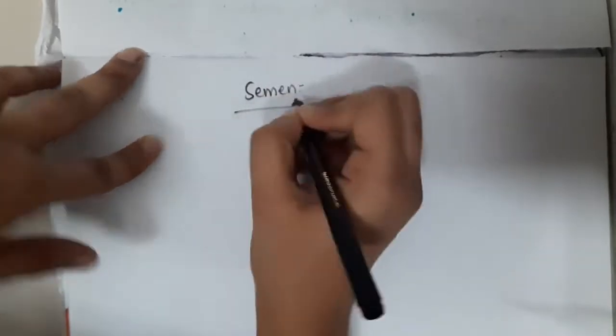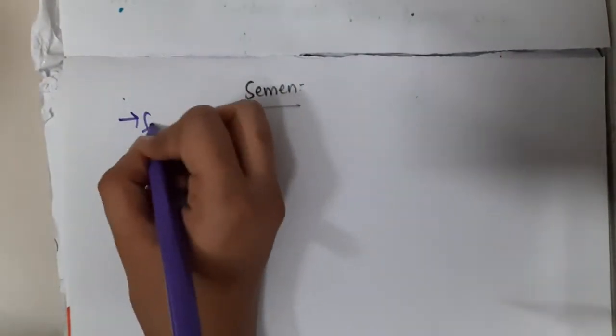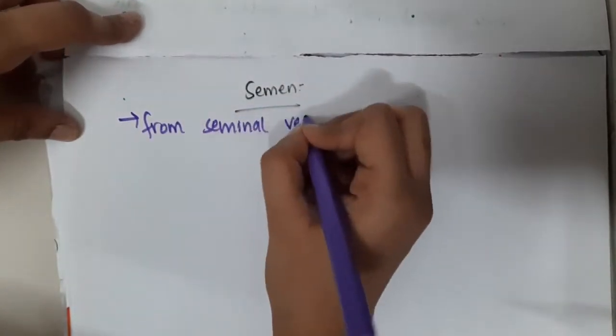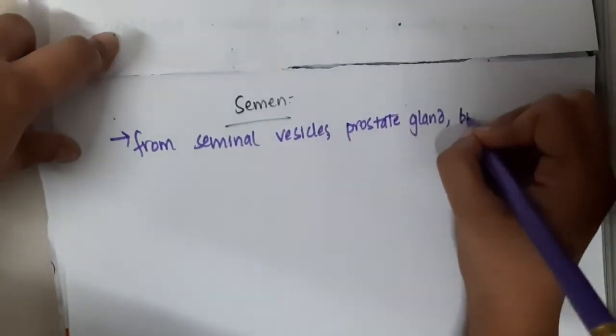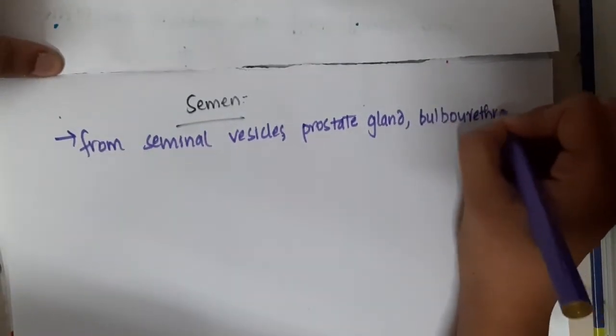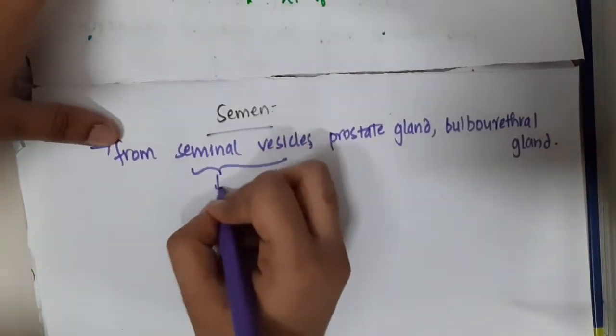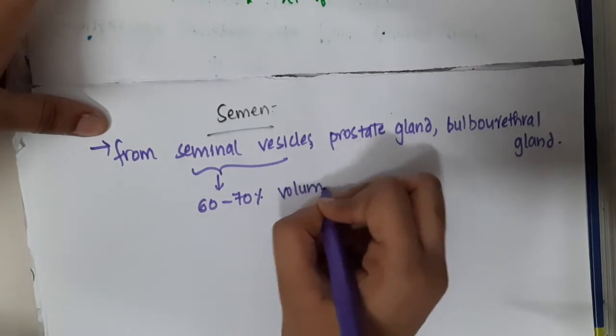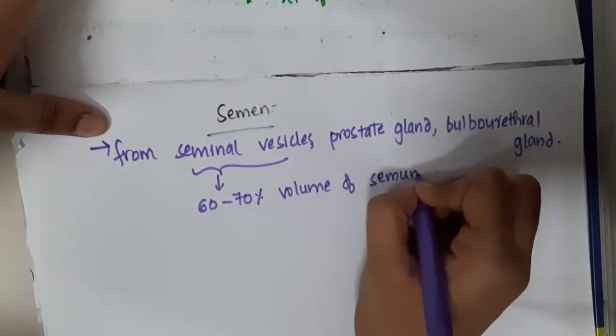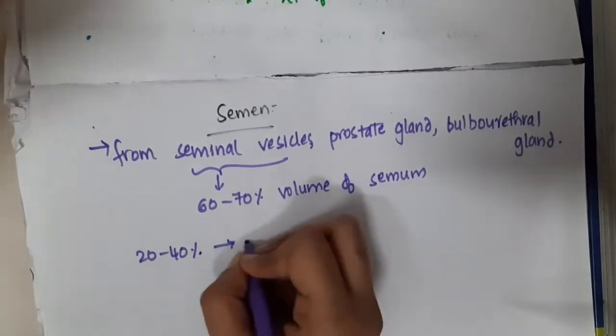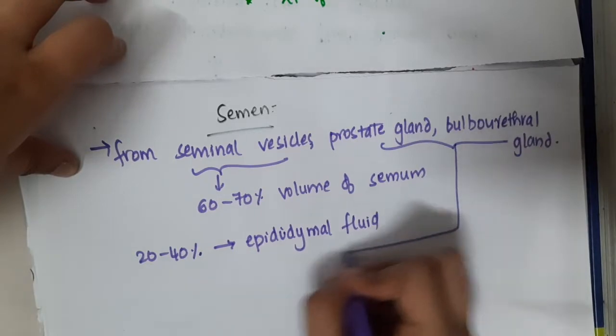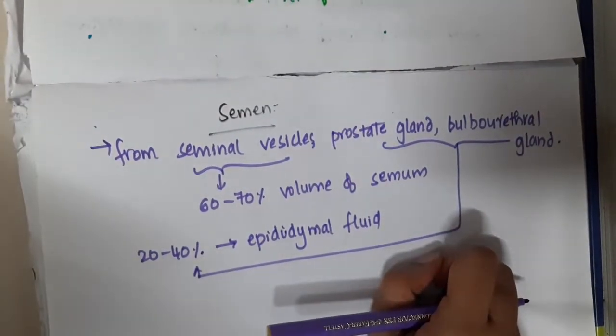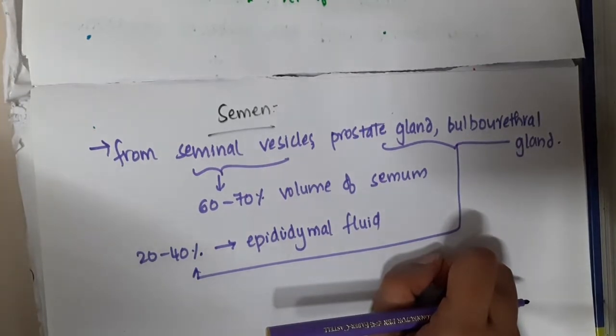Let us now learn some important points about semen. Semen is produced from seminal vesicles, prostate gland, and bulbourethral glands. Seminal vesicles constitute 60 to 70 percent of the volume of semen, and the remaining 20 to 40 percent will be epididymal fluids. The prostatic gland and bulbourethral gland secretions account for the total 20 to 40 percent.